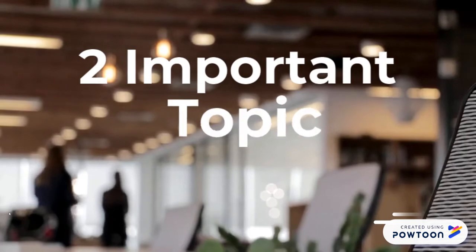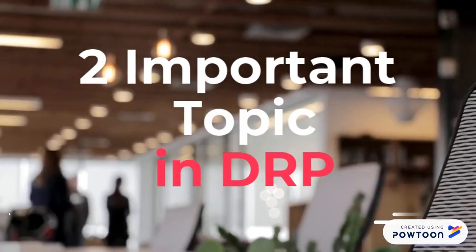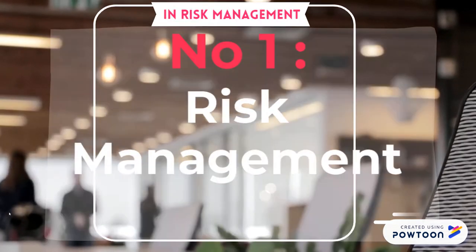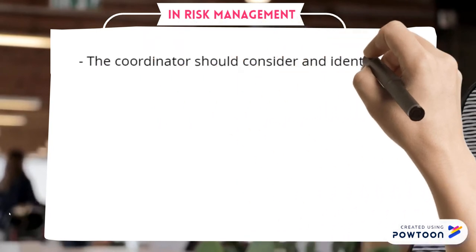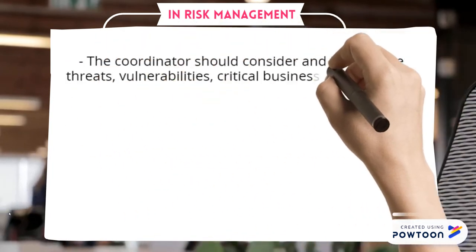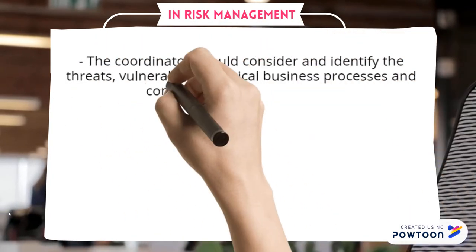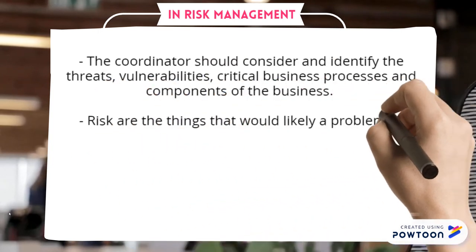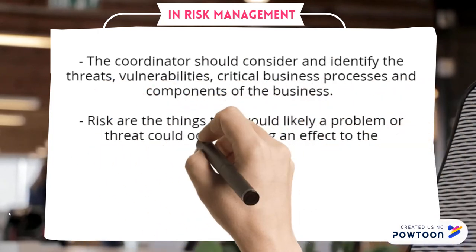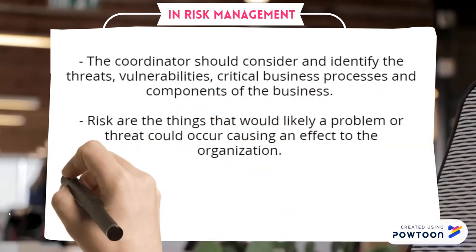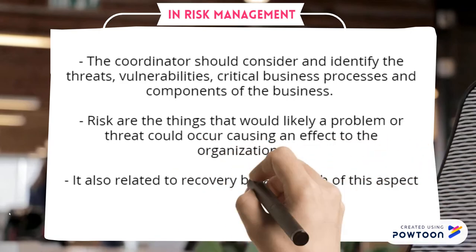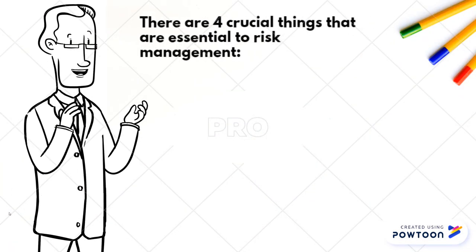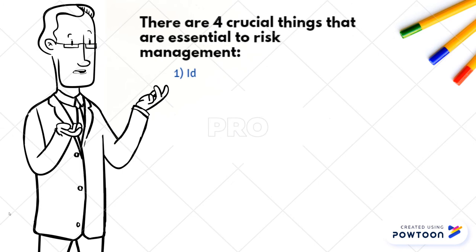There are two important topics in DRP. Number one is risk management. In risk management, the coordinator should consider and identify the threats, vulnerabilities, critical business processes and components of the business. Risks are things that would likely cause a problem or threat to occur, causing an effect to the organization. It is also related to recovery because both aspects are used to prevent risk.